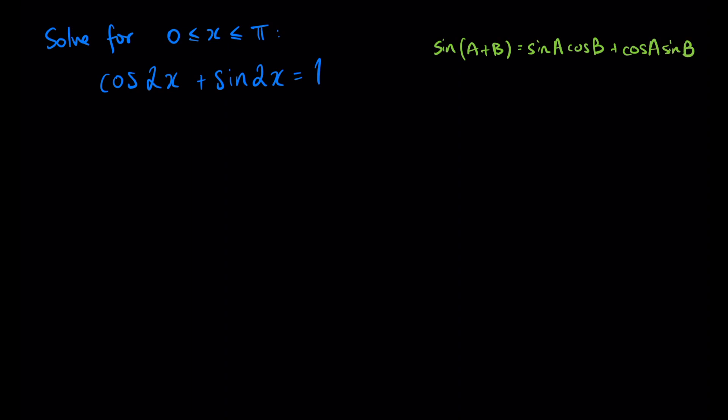We want to simplify this equation so we can reduce it down to sine of something plus something else. The way we're going to do this is to divide through by a constant. The constant we're going to divide through by is root 2.